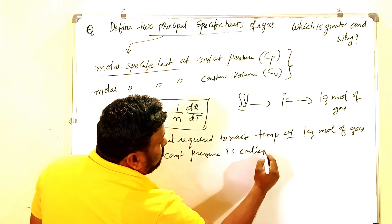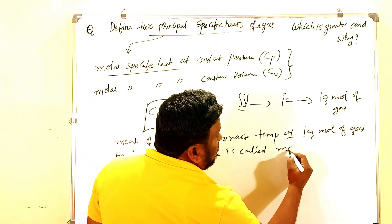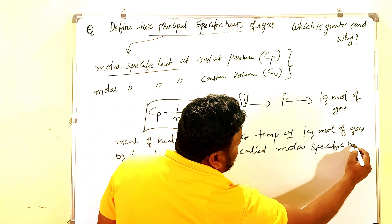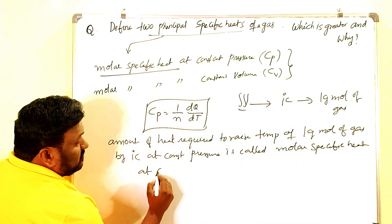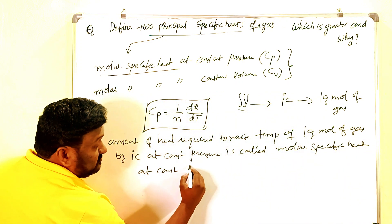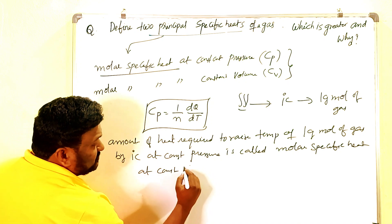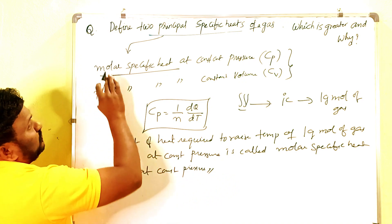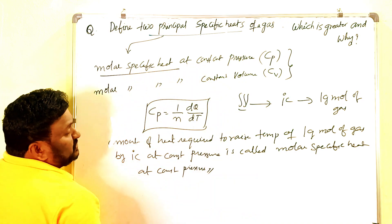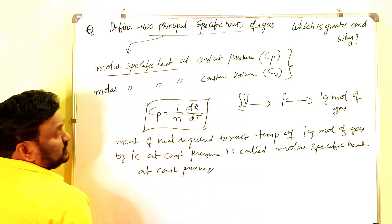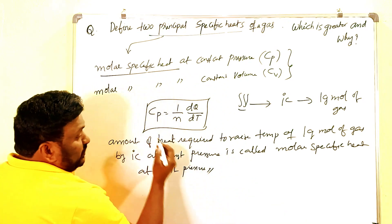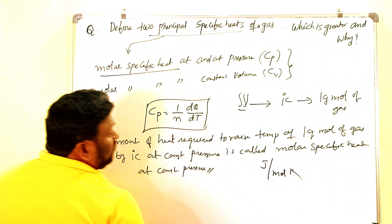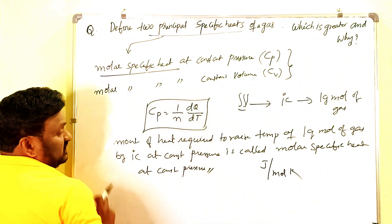That is called molar specific heat at constant pressure. The unit of both Cp and Cv is joule per mole kelvin.